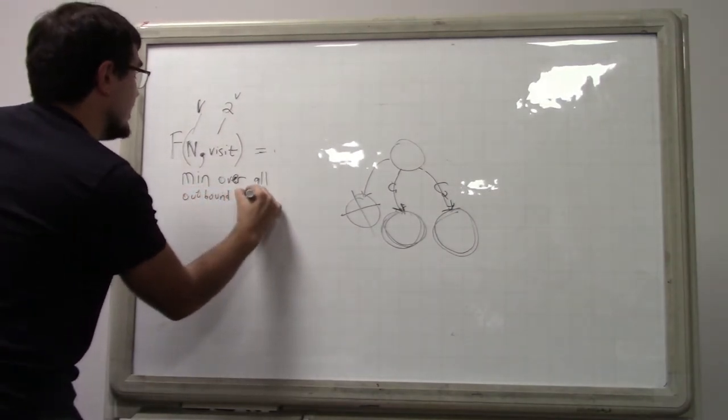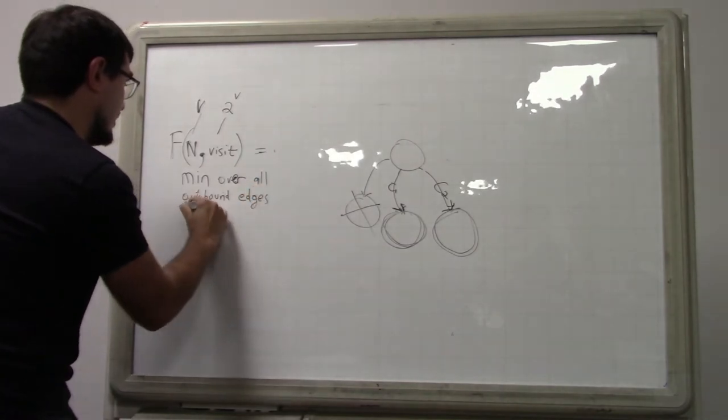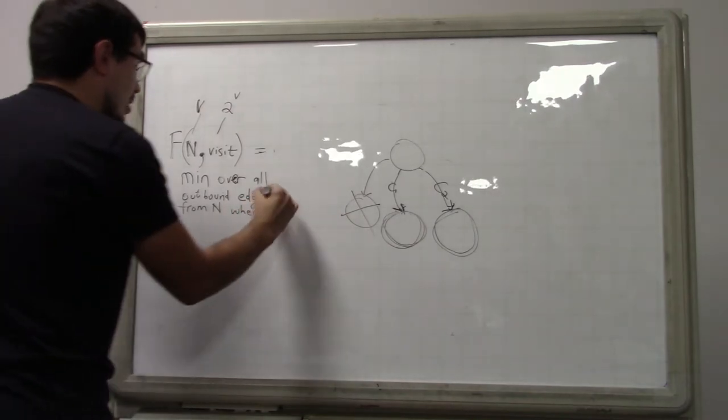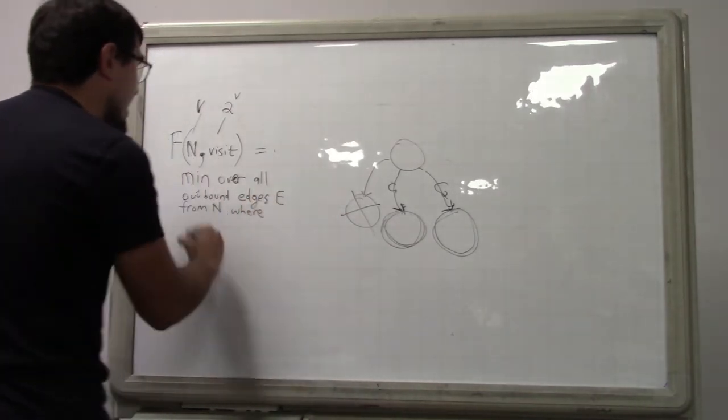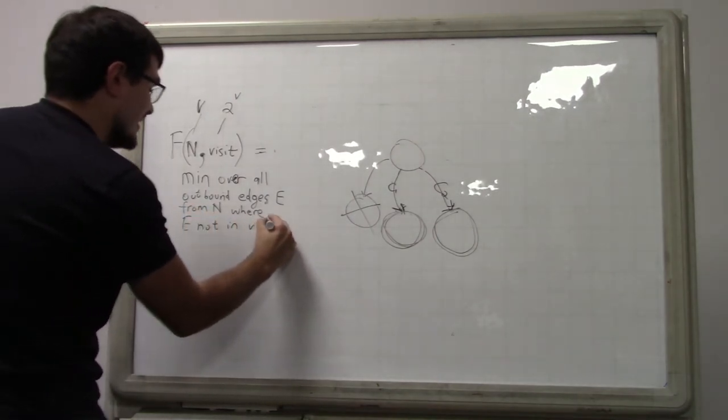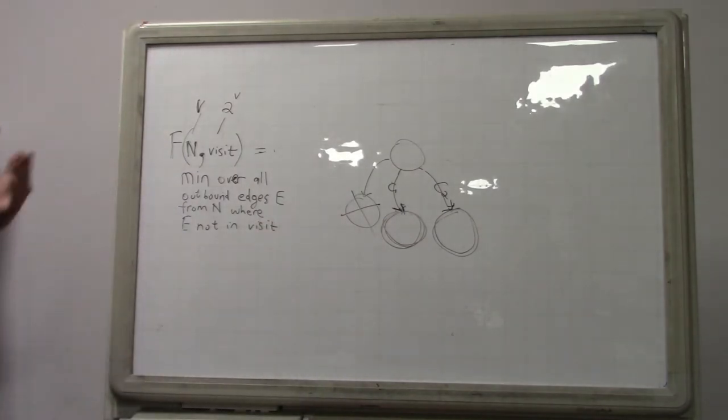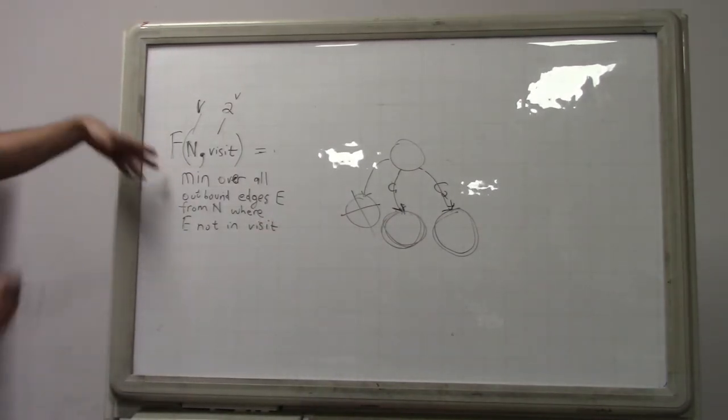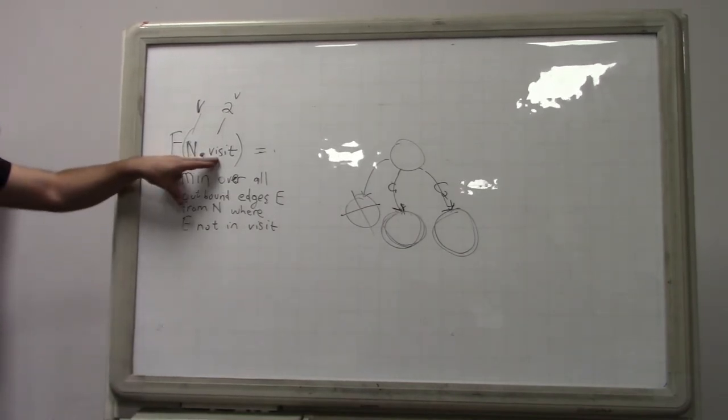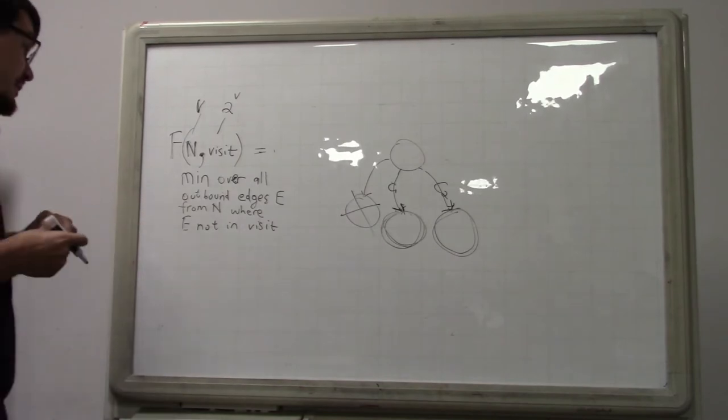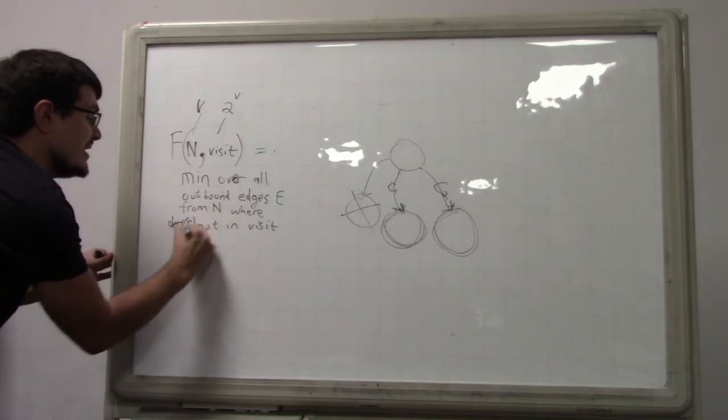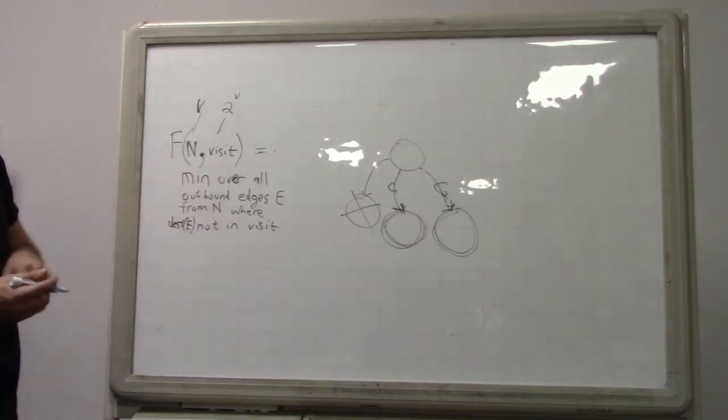Min over all outbound edges from N, where... All outbound edges E from N, where E not in visit. It's kind of a mouthful, but essentially what it means in implementation-wise is you will loop over all your outbound edges, and for each outbound edge, you will check that...